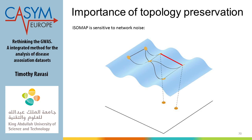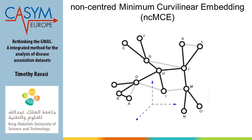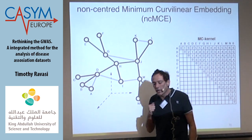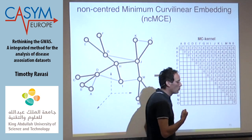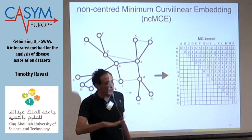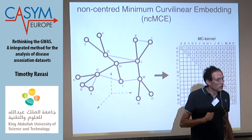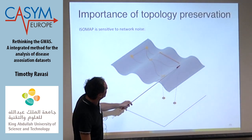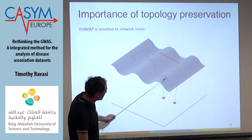How can we avoid the Isomap problem? We applied non-centered minimal curvilinearity (MC), another dimensionality reduction technique. Instead of squashing the data directly into two dimensions, we first extract the minimum spanning tree — the real distances between nodes in the network — to avoid placing distant nodes artificially close. We generate an MC kernel matrix using minimum spanning tree distances, then calculate either Euclidean distance or shortest path between nodes.